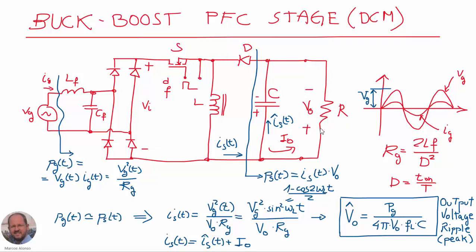For this converter it is also interesting to calculate the voltage ripple at the output. This voltage ripple is going to be superposed to the DC voltage at the output. We can do this by equaling the instantaneous input power at the input of our converter with the instantaneous power being injected into the network formed by the load and the capacitor. The instantaneous input power can be calculated as the instantaneous input voltage squared divided by Rg, which is the equivalent resistance of our converter.